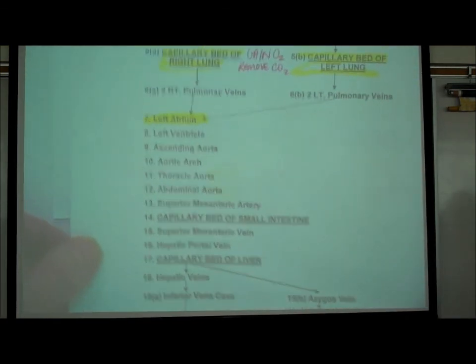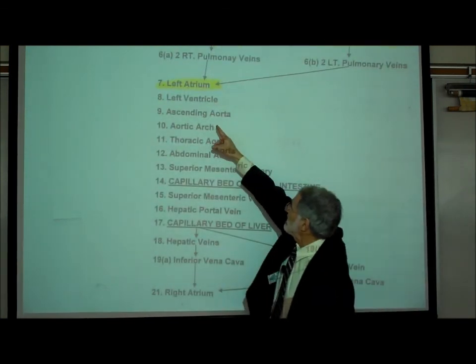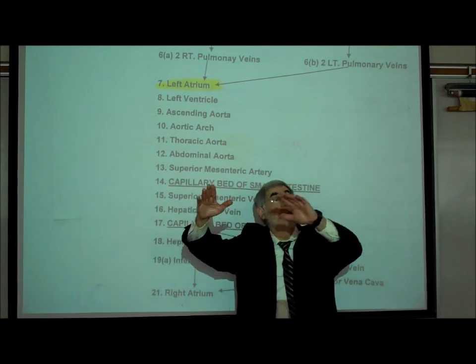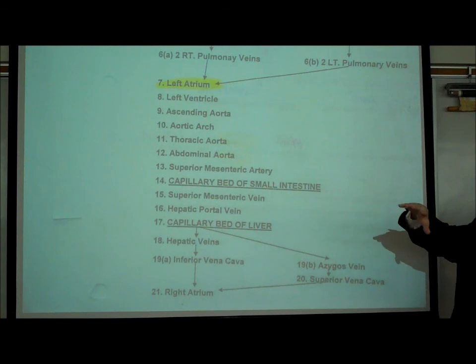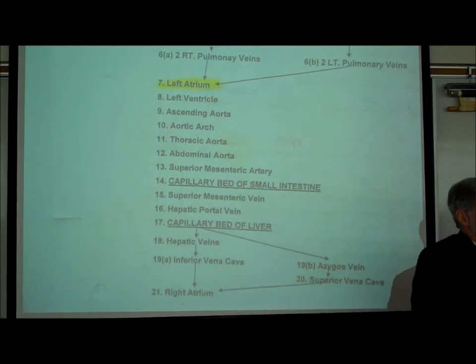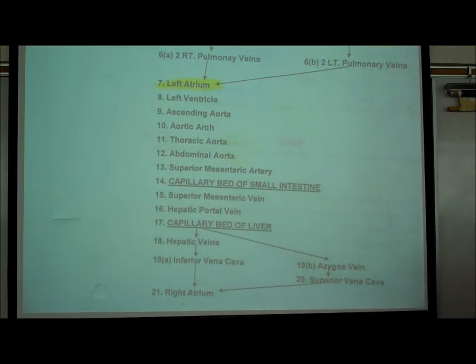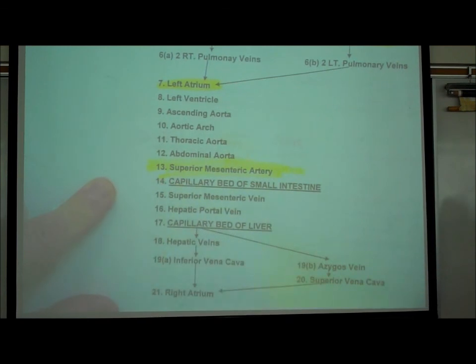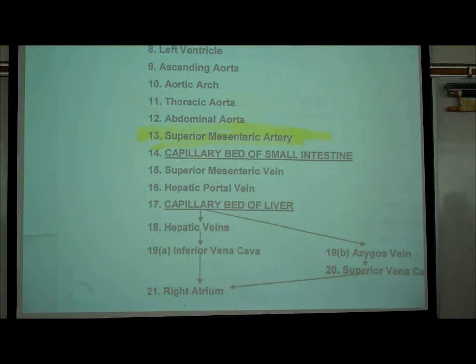Following the path on our diagram: ascending aorta, aortic arch — not getting off here — thoracic aorta, abdominal aorta. Now we're in the abdomen; we take the superior mesenteric artery turn-off. You should be able to see that red blood vessel going from the abdominal aorta to the small intestine on the cat.